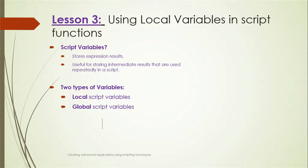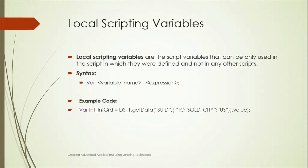Let's start with Lesson 3: Using Local Variables in Script Functions. We need variables in every programming language, and Design Studio is no exception. Script variables store expression results and are useful for storing intermediate results that are used repeatedly in a script. There are two types: local script variables and global script variables. Local variables are applicable to that particular script, while global variables are applicable to the entire application.